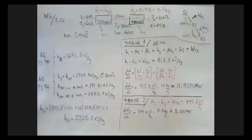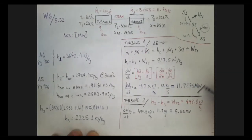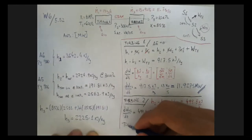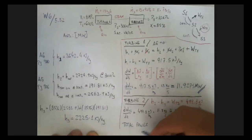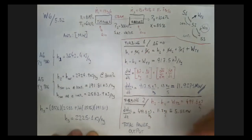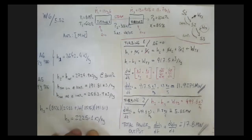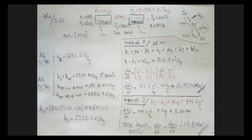We broke the problem into two parts: turbine 1 provides about 11.9 megawatts and turbine 2 provides about 5.85 megawatts. The total power output equals the sum of both turbines, which is approximately 17.8 megawatts. Nothing fundamentally new here — just an extra turbine, solved one at a time using the same energy conservation principles.